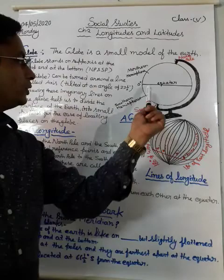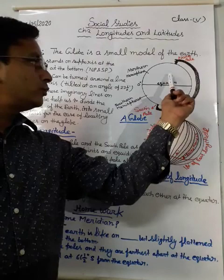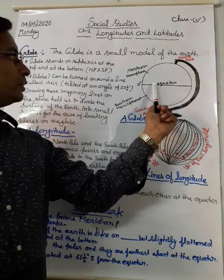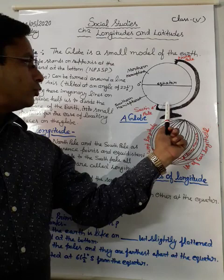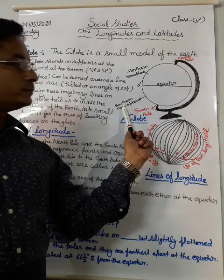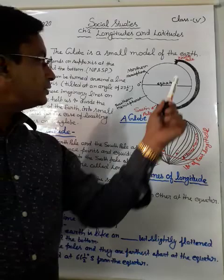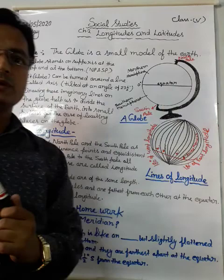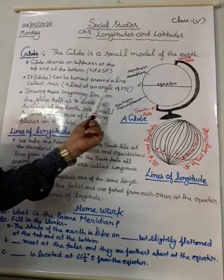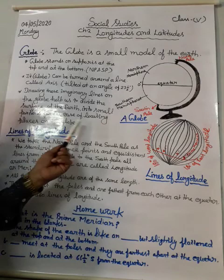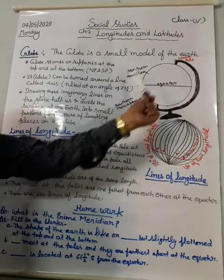You can see here it is zero degrees, and this line is called the equator. The equator divides the earth into two equal halves. The upper part from the equator is called the northern hemisphere and the lower part is called the southern hemisphere. Our India lies in the northern hemisphere.